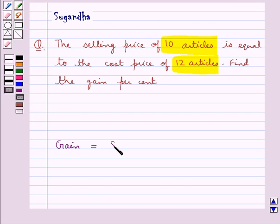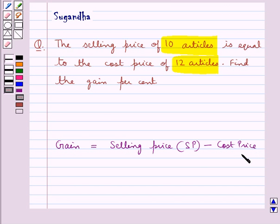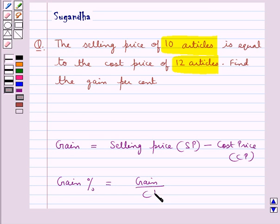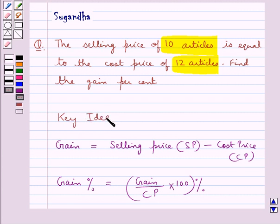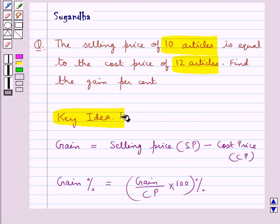Gain is equal to the selling price — that is SP — minus the cost price — that is CP. And gain percent is equal to gain upon the cost price CP, into 100 percent. This is the key idea to be used in this question.